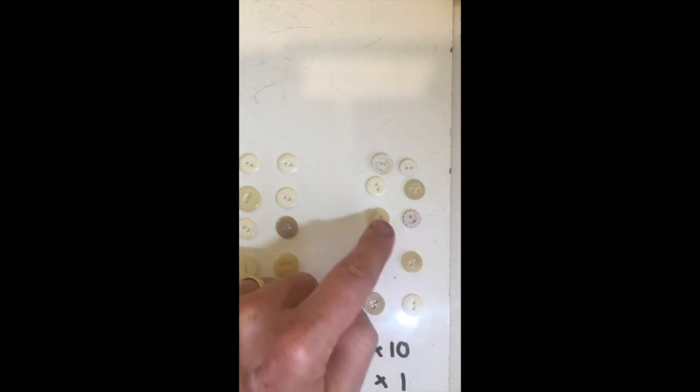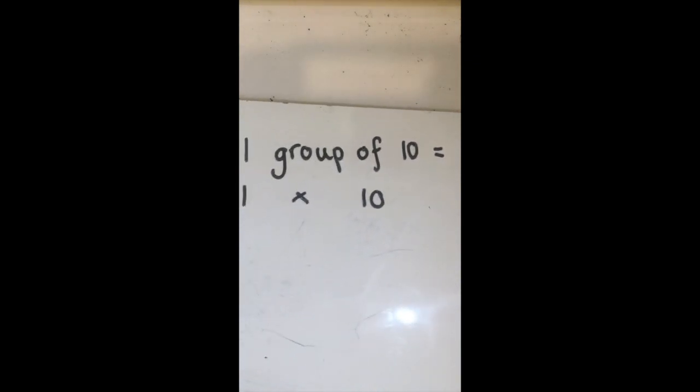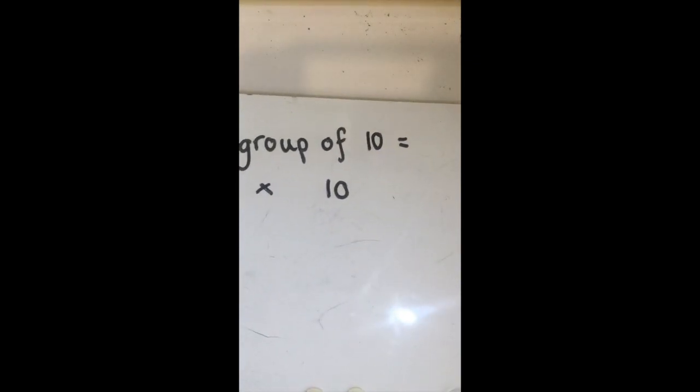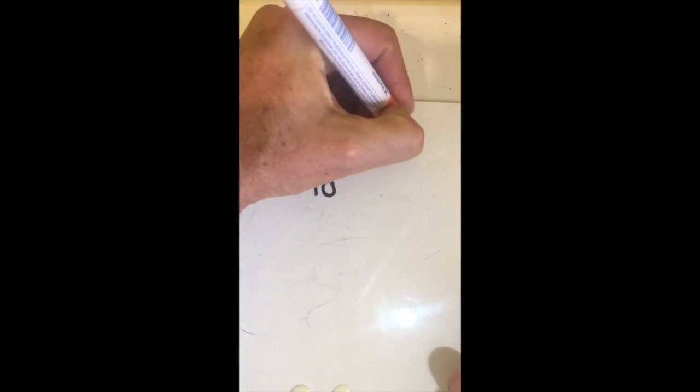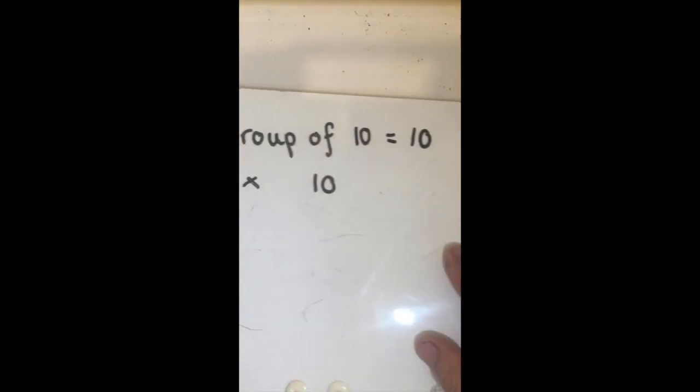One, two, three, four, five, six, seven, eight, nine, ten. So I've got one group of ten equals ten, or one times ten equals ten.